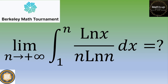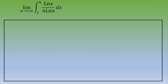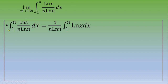If you want to give it a try, please pause the video. Otherwise, let's see the solution. First, we notice that n is just a constant with respect to x, so we can pull those terms outside the integral. We can rewrite this as 1/(n·ln(n)) times the integral from 1 to n of ln(x) dx.